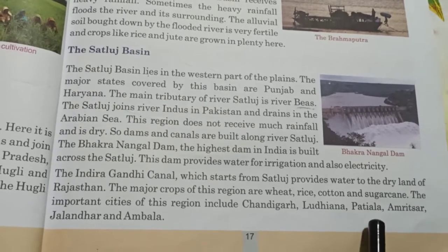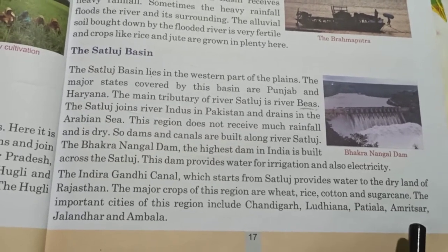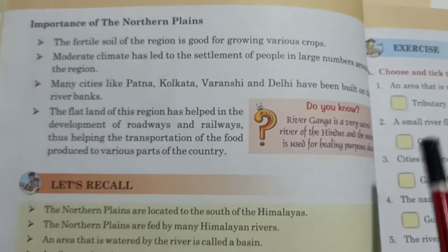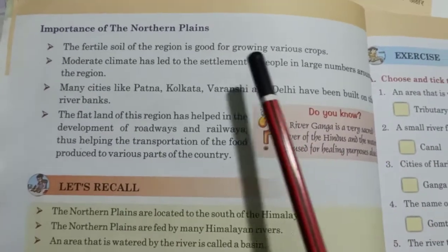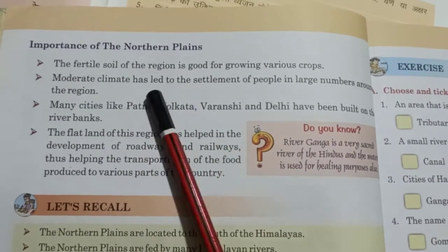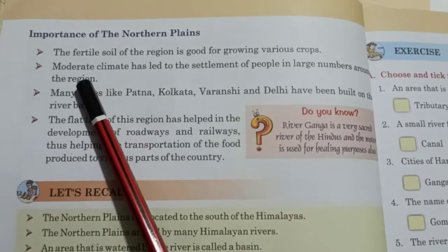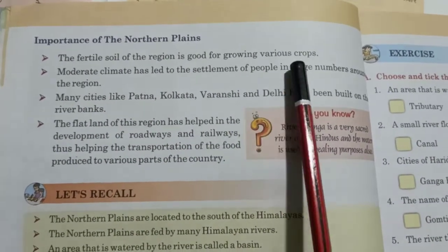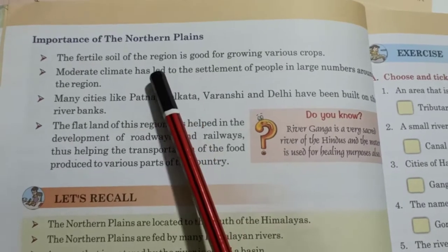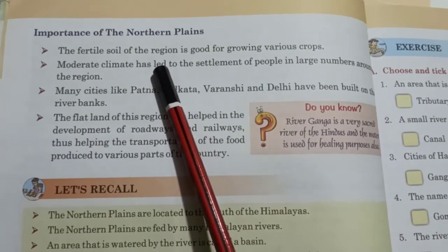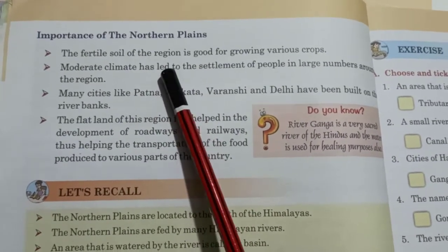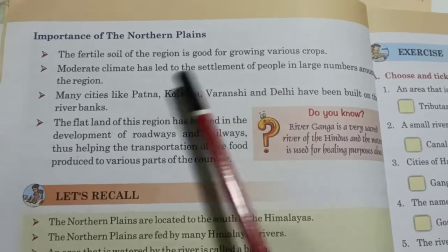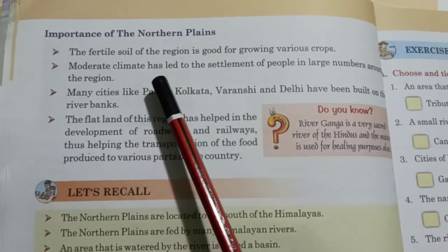The important cities of this region include Chandigarh, Ludhiana, Patiala, Amritsar, Jalandhar, and Ambala. Now we will look at the importance of the Northern Plains. The fertile soil of this region is good for growing various kinds of crops.